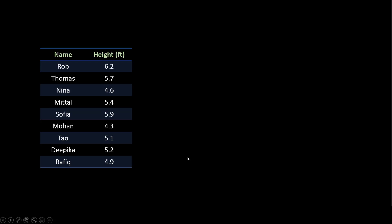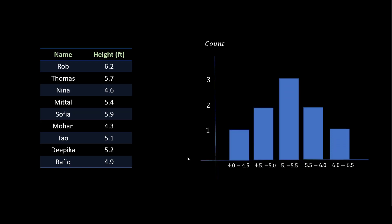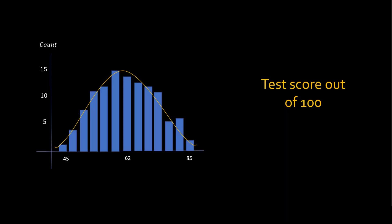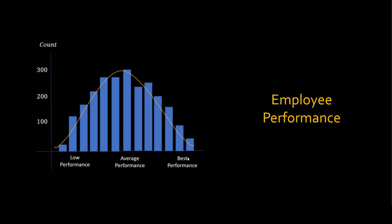We need to understand normal distribution before we move on to log normal distribution. Here I have people's height database, and if you plot that on a histogram it looks like a bell curve. If you are aware about normal distribution, you know that this shape is called a bell curve — this is normal distribution. There are many examples of normal distribution in real life, such as test scores, employee performance, and so on.